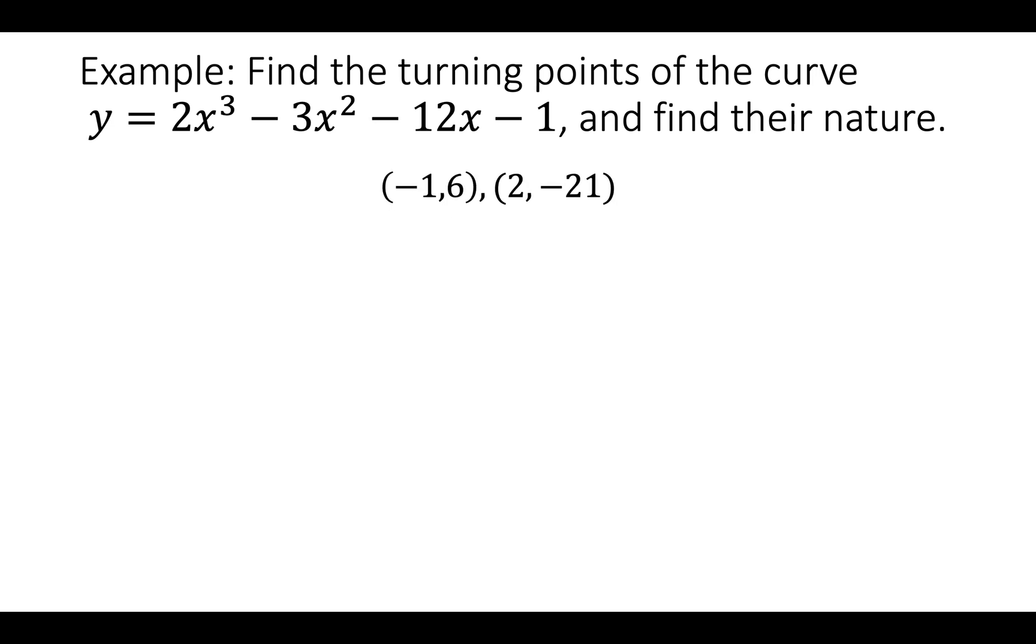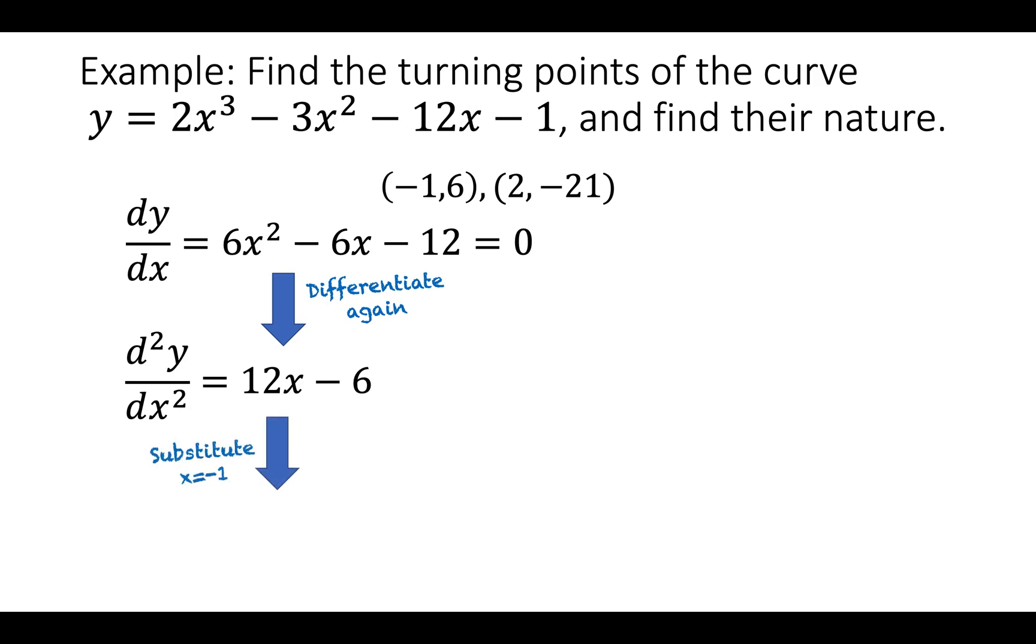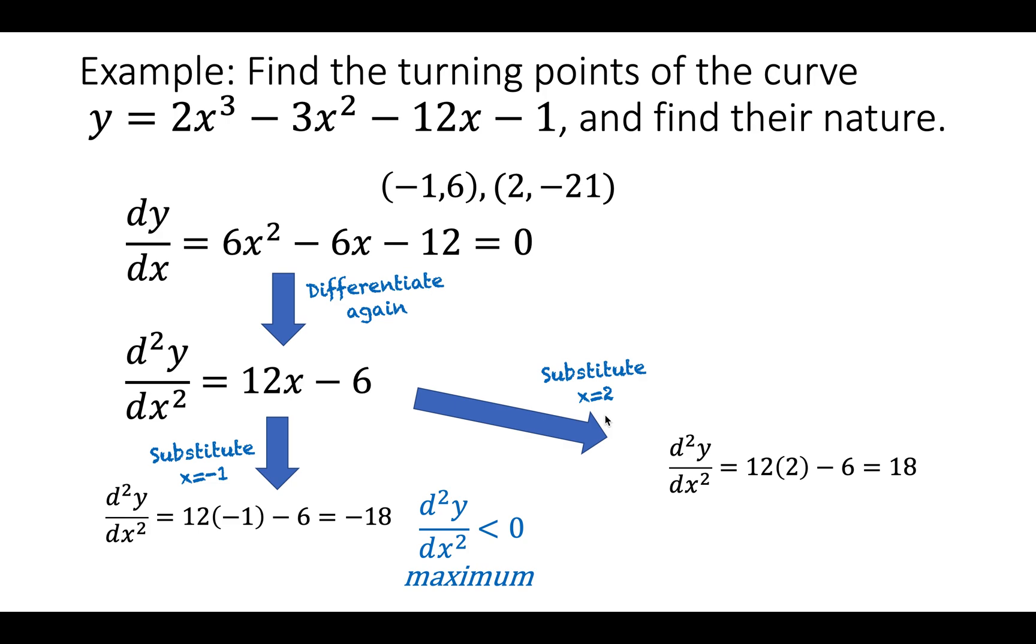Now we know the coordinates let's find their nature. We've already differentiated it once. Let's differentiate it again to find the second derivative and do the second derivative test. We substitute the x coordinate x equals minus 1 and we get this is minus 18 and therefore it's less than zero, it's a maximum. Then we substitute x equals 2 in. We get positive 18 and we get a minimum. Now we know the two coordinates and whether they're maximum or minimum. The first coordinate pair is a maximum. The second one is a minimum.